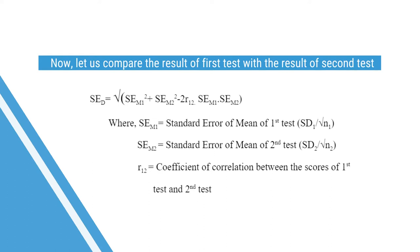The standard error of difference is equal to: the square root of SEM₁² plus SEM₂² minus 2·R₁₂·SEM₁·SEM₂, where SEM₁ is the standard error of the mean of the first test, SEM₂ is the standard error of the mean of the second test, and R₁₂ is the coefficient of correlation between the scores of the first test and the second test.